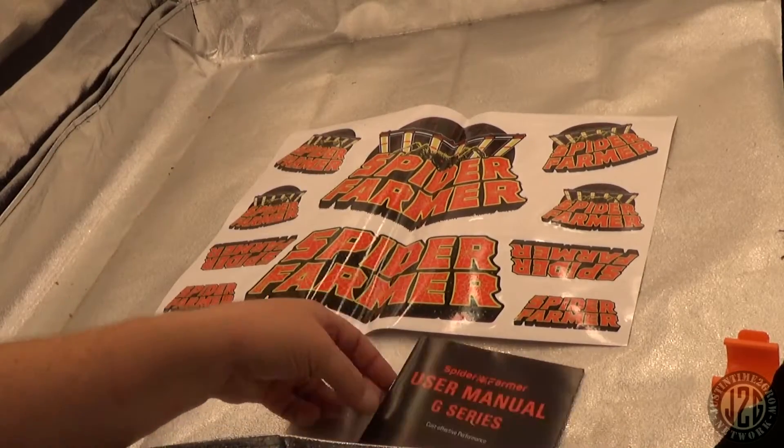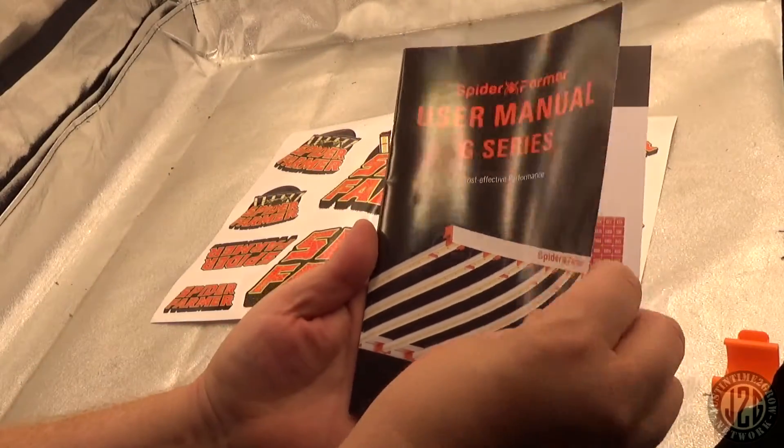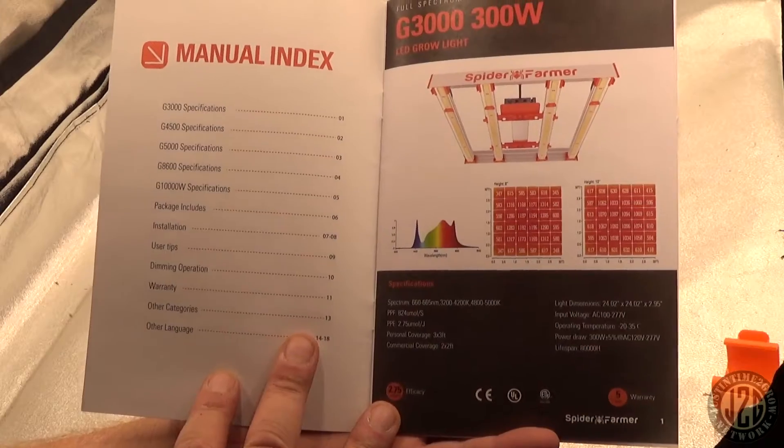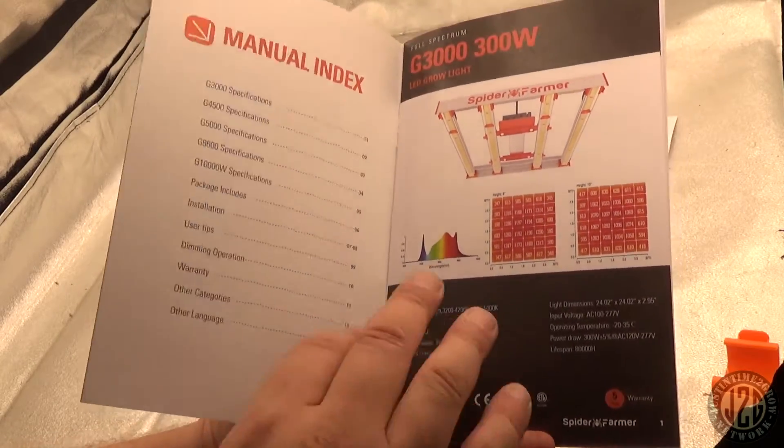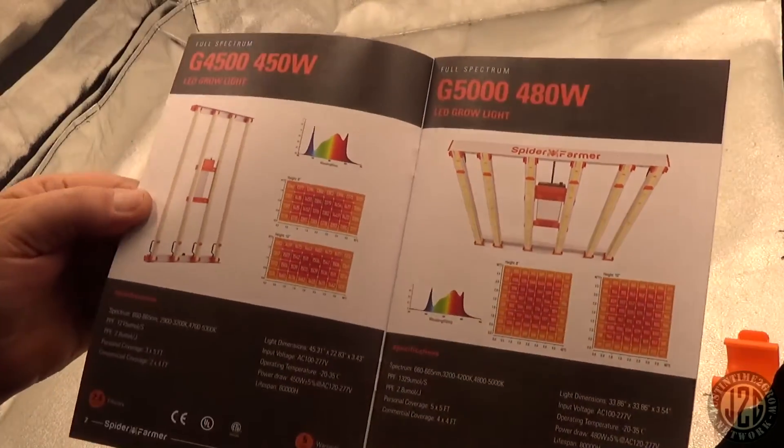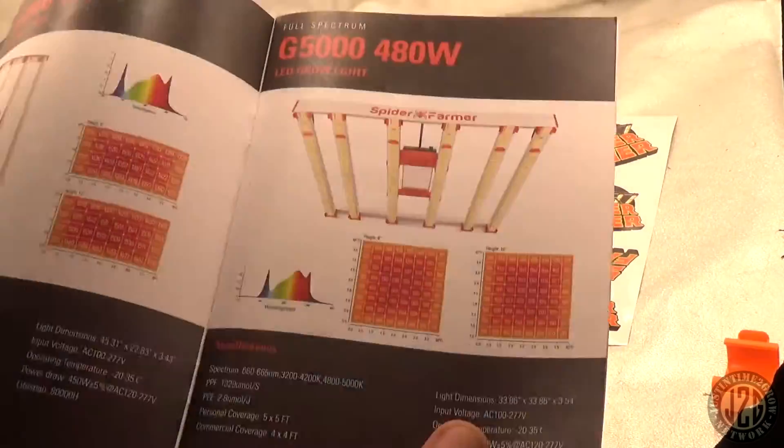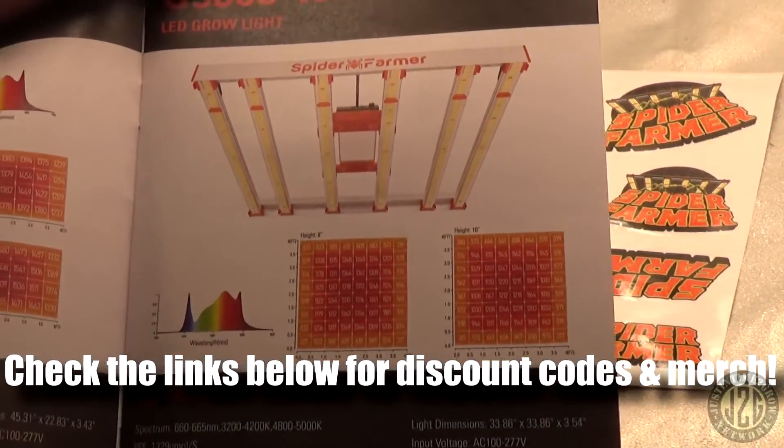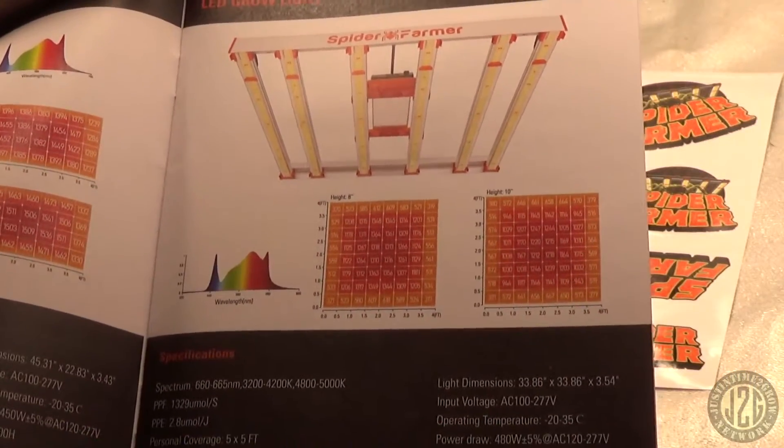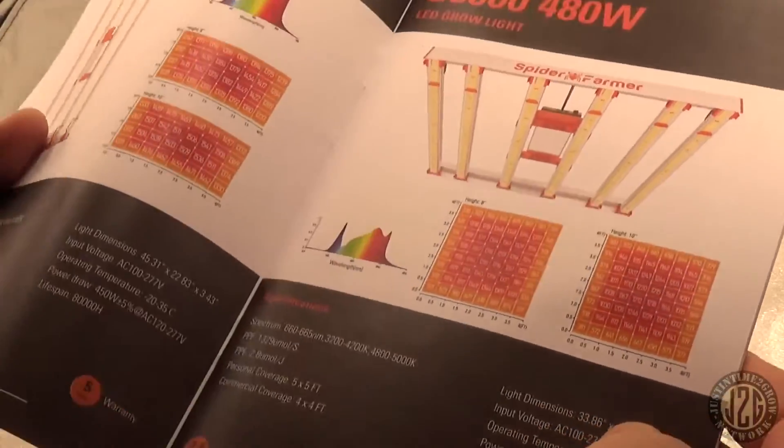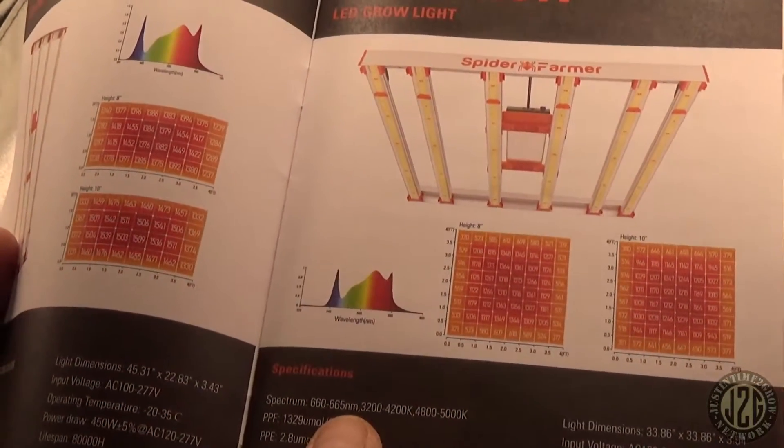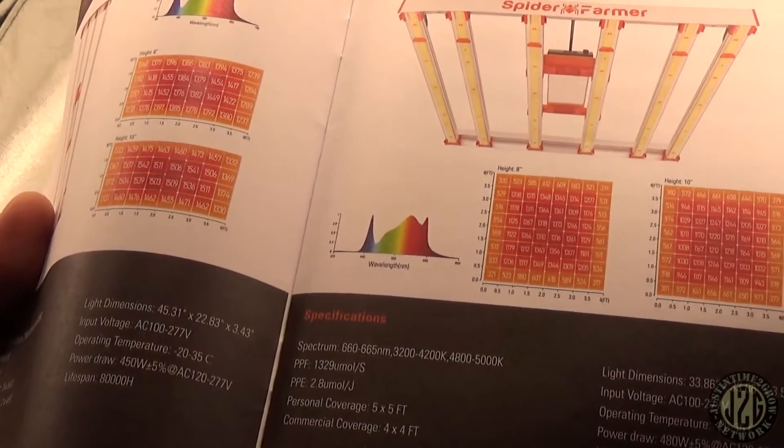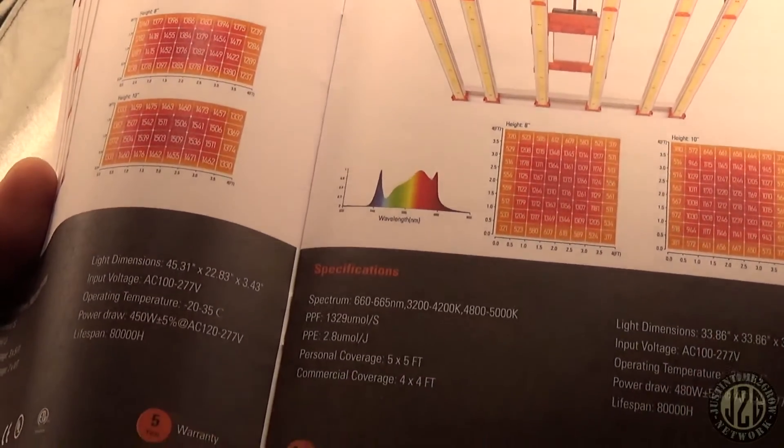Let's take a look at the manual here real quick. Take a look at that, there's their par map. There's the SE5000 right there. That's their par map for the SE5000: 480 watts, spectrum 660, 665, 3200 to 4200K, 4800 to 5000K. So it has cool white, warm white, and red of course.